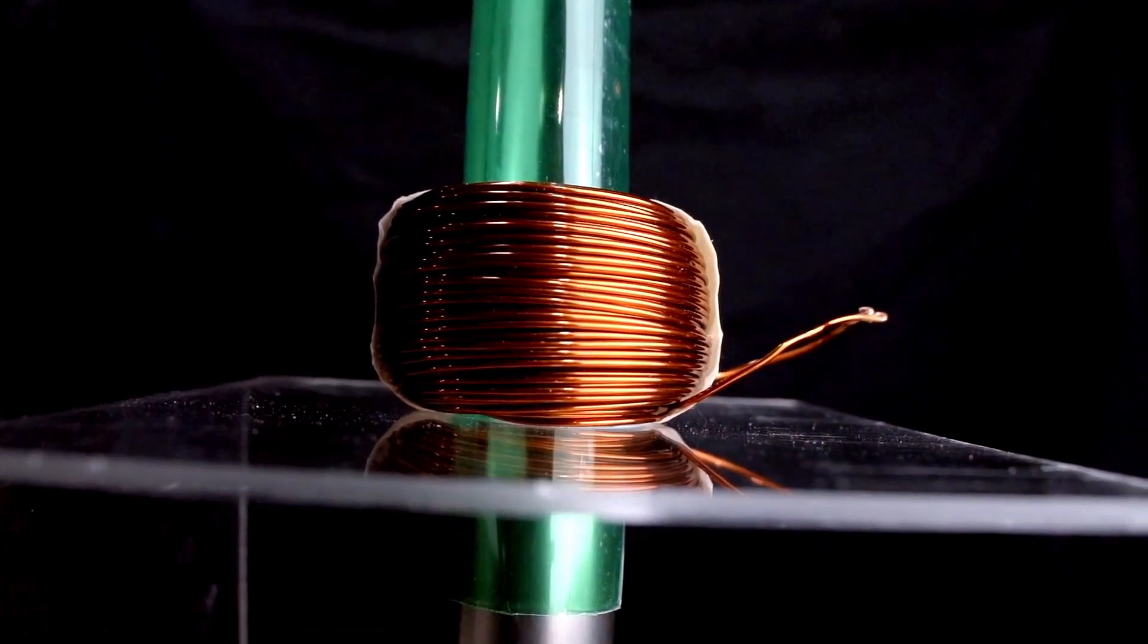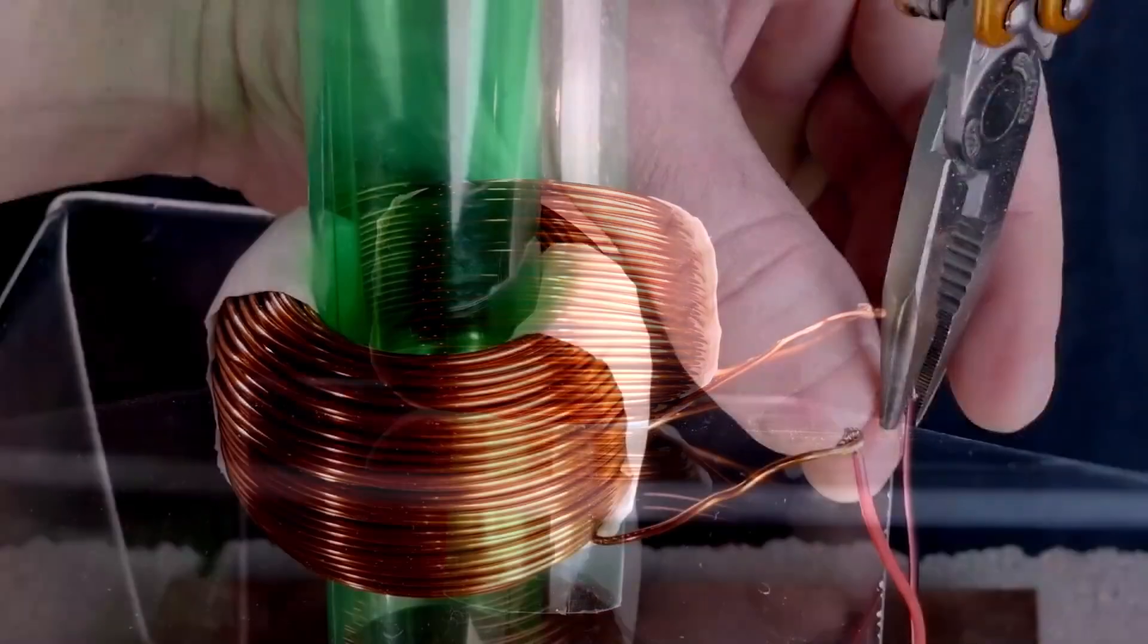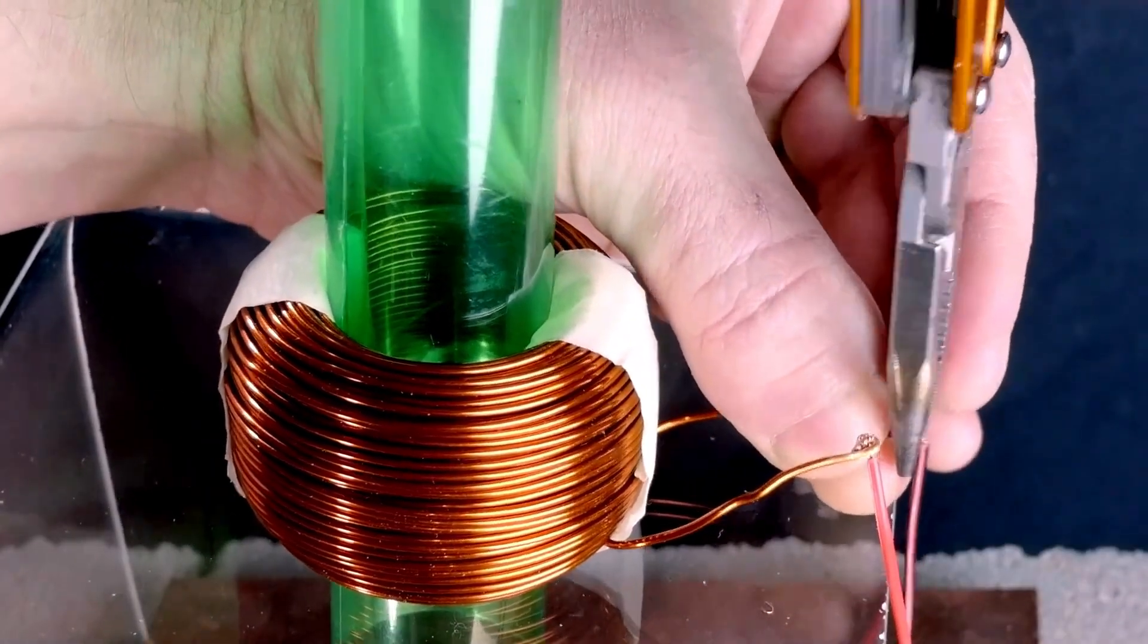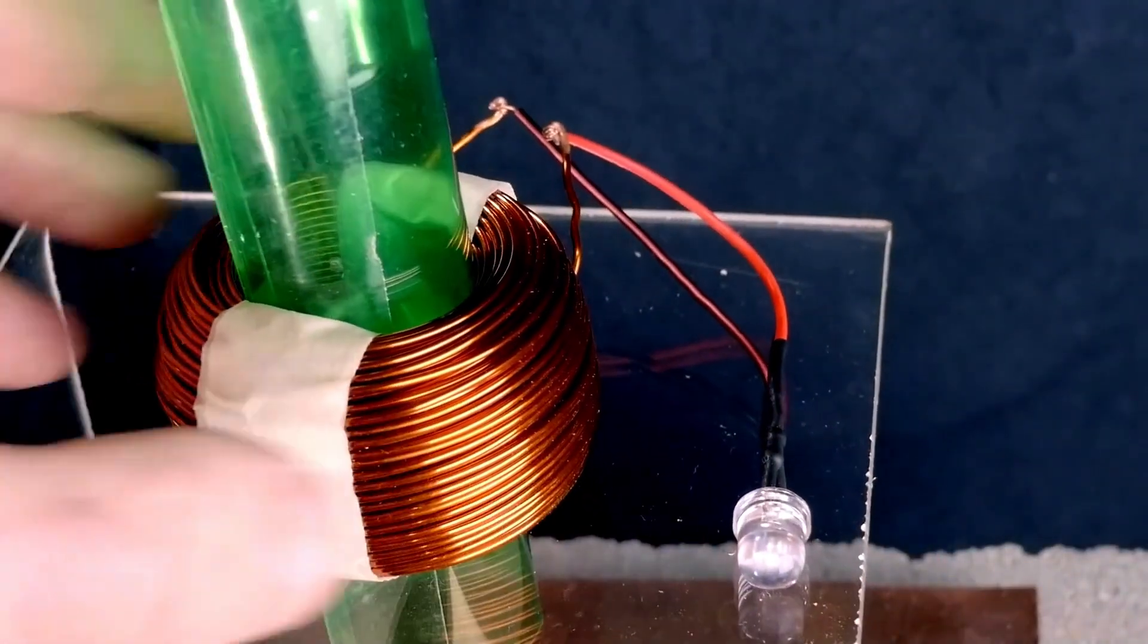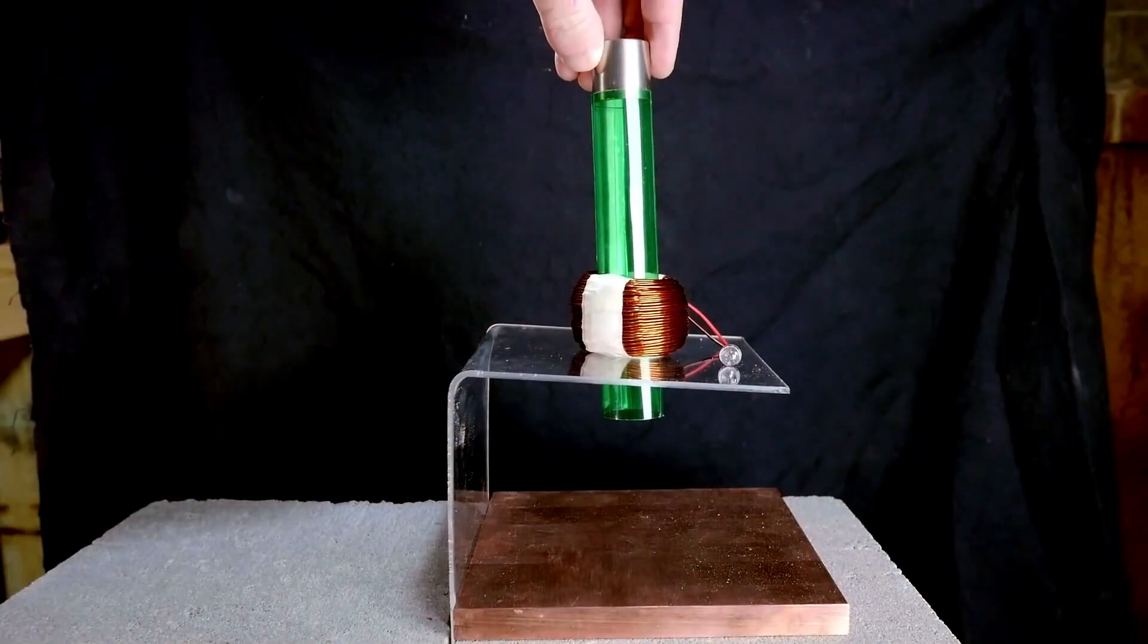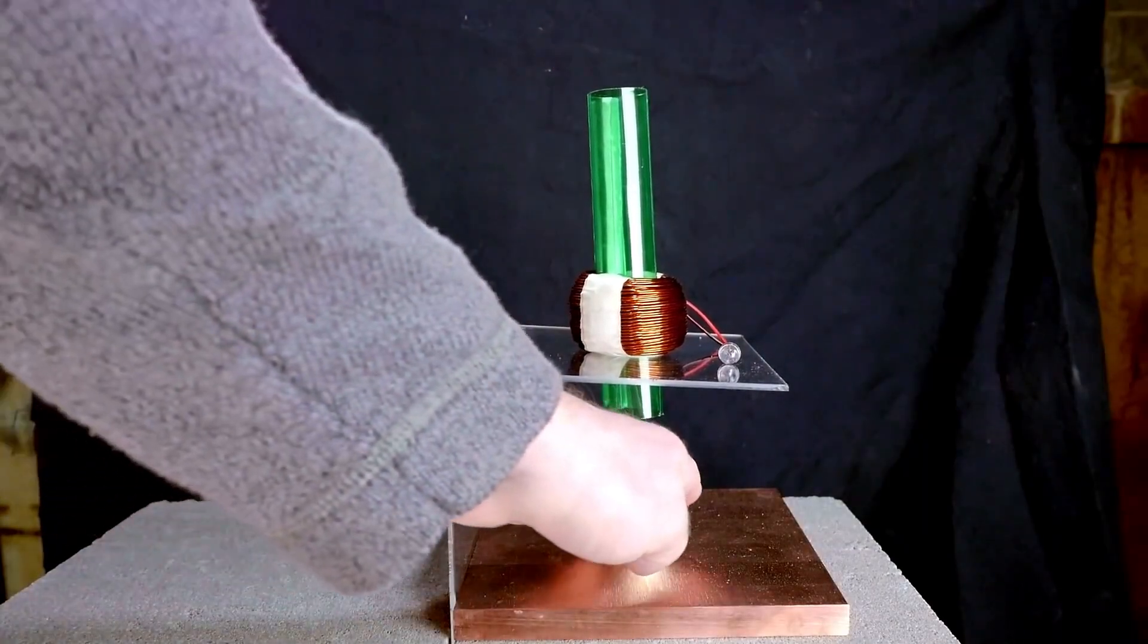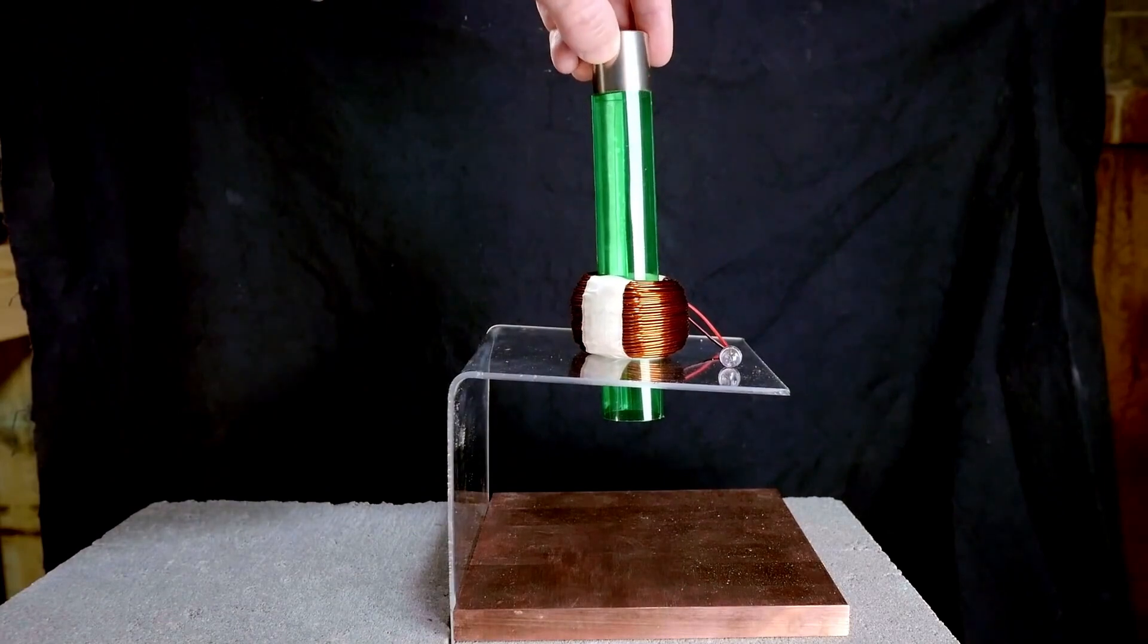If I once again disconnect the coil and bridge the circuit with an LED, we can see a better indication of the electricity. The LED is very efficient, so powering it doesn't slow down the magnet quite as much as when the circuit was closed directly.